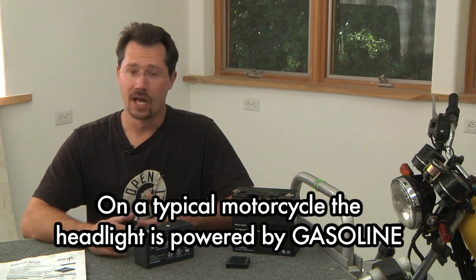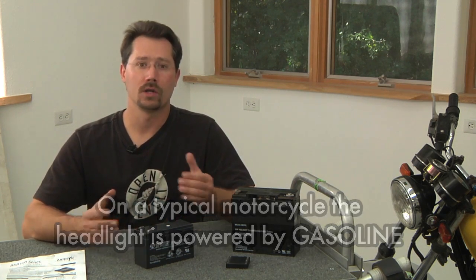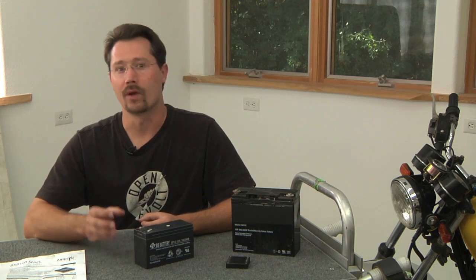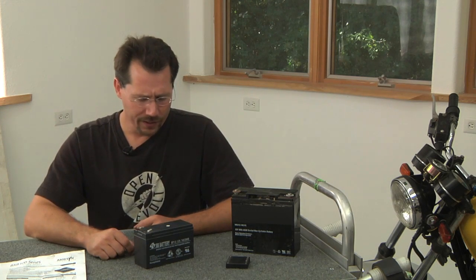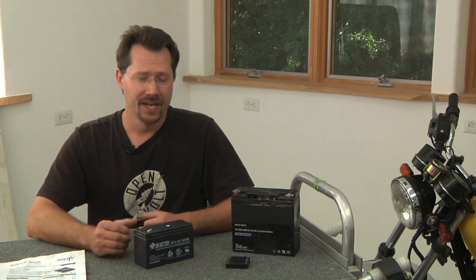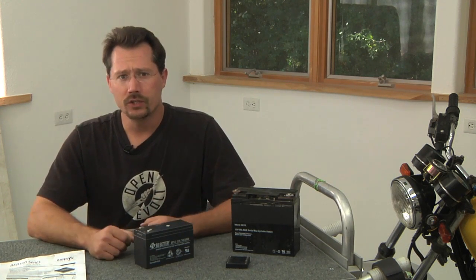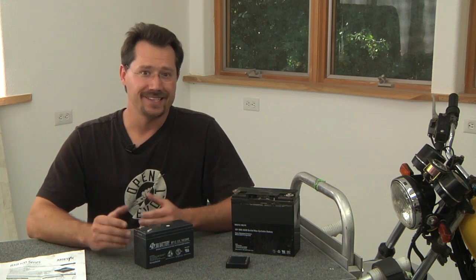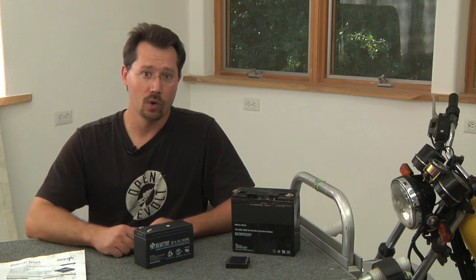Now on an electric motorcycle, there's no engine and there's no alternator, so where do we get those 12 volts? Well, you might think let's just use the 12-volt battery that's already on there, and that's actually one way you could do it. All you would need would be a separate 12-volt charger to go to that battery.